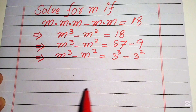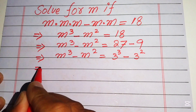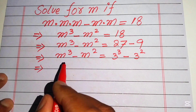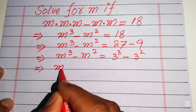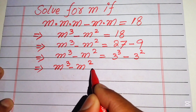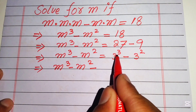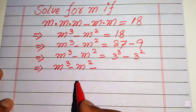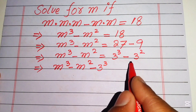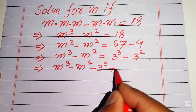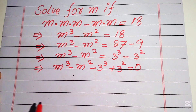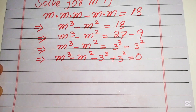After this step, we move both terms from the right-hand side to the left-hand side. It will be written as m cubed minus m squared minus 3 cubed plus 3 squared equals 0. When we move plus 3 cubed to the left it becomes minus 3 cubed, and minus 3 squared becomes plus 3 squared.